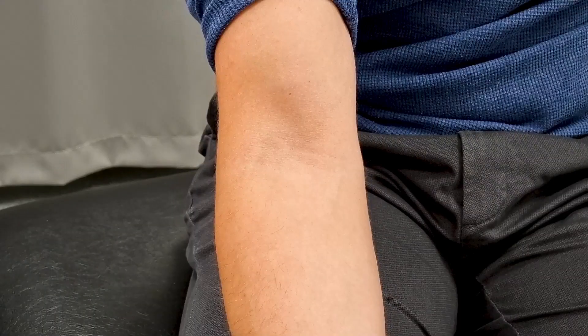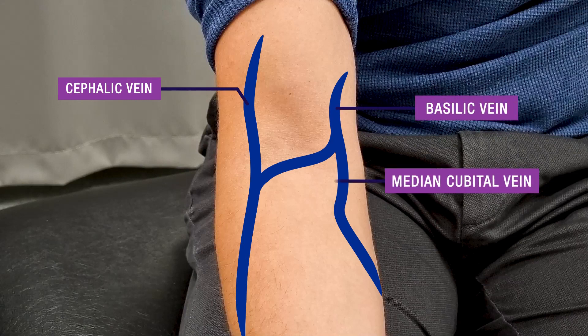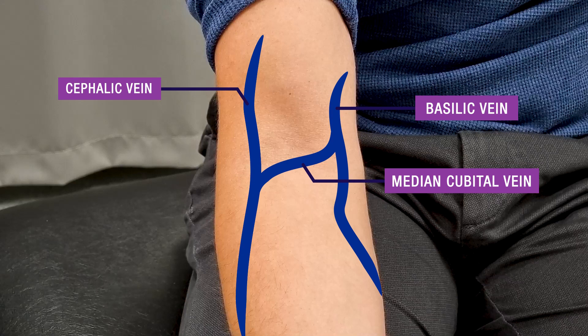In the antecubital fossa, there are three veins that can be appreciated: the cephalic vein, the basilic vein, and the median cubital vein. The clinical relevance of the antecubital fossa is that it is by far and away the most common site for venipuncture, because one of these three veins is usually superficial and therefore easy to access.